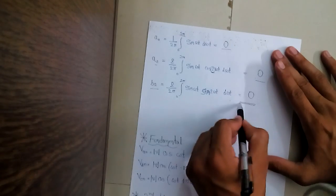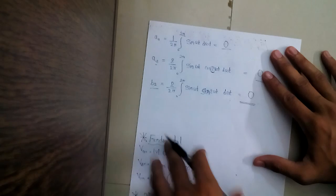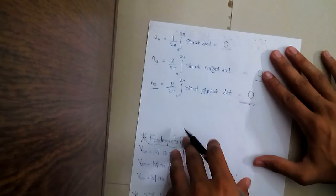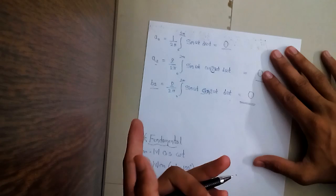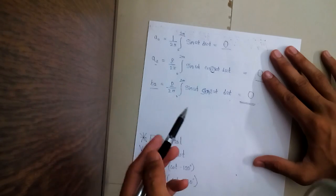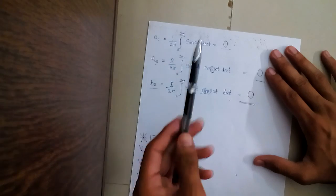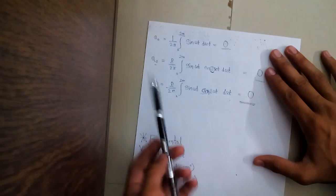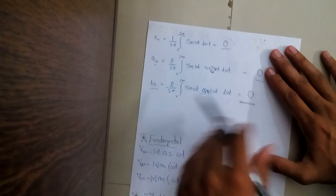Similarly, B2 will also come out to 0. This will happen for the three-phase system also, because all three waves will be of a similar kind — all three will be sinusoidal waves. You can take any even harmonics; take the case of A4 and B4, and you will find they will always come out to be 0.